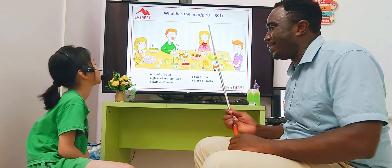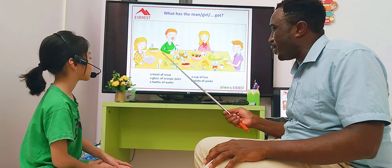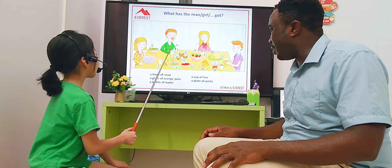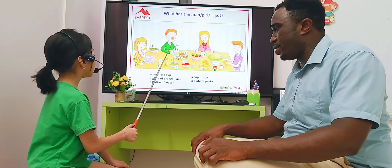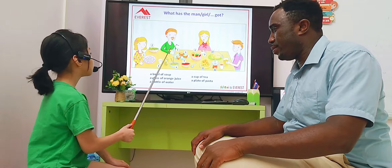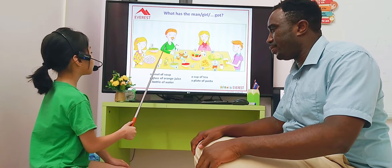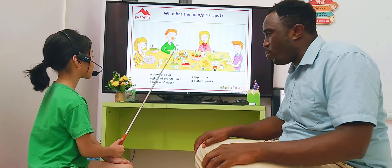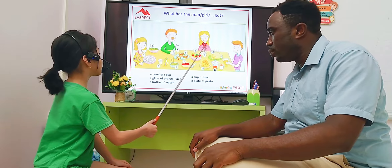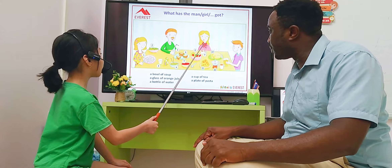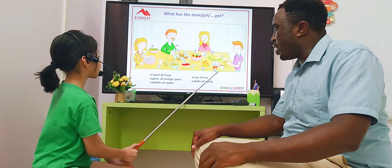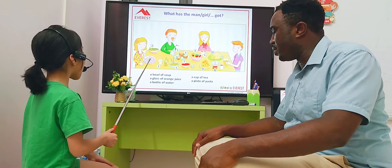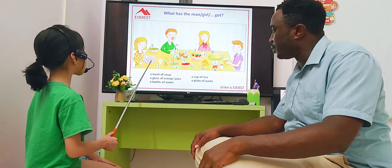With this picture. In this picture, what has the man got? In this picture, the man has got a bottle of water. Very good. What has the woman got? The woman has got a cup of tea. What has the girl got? The girl has got a bottle of pasta.